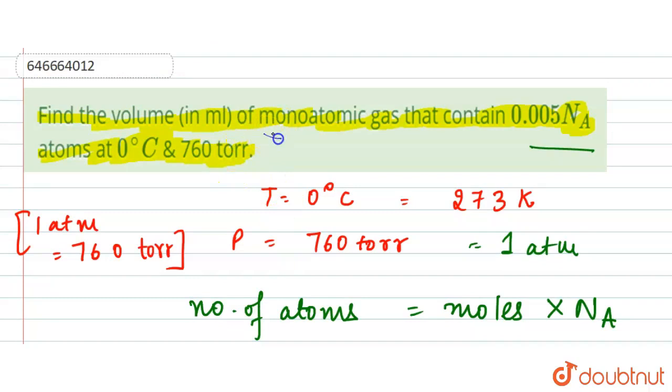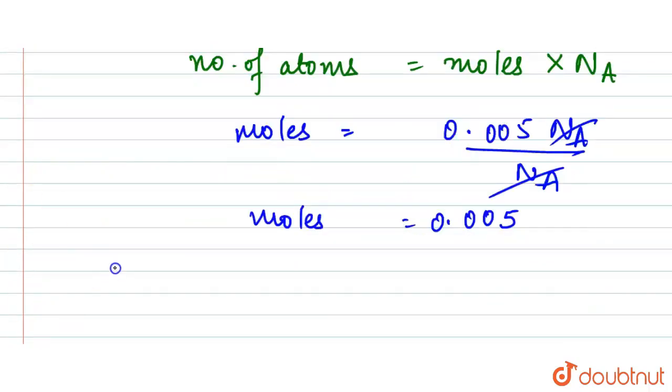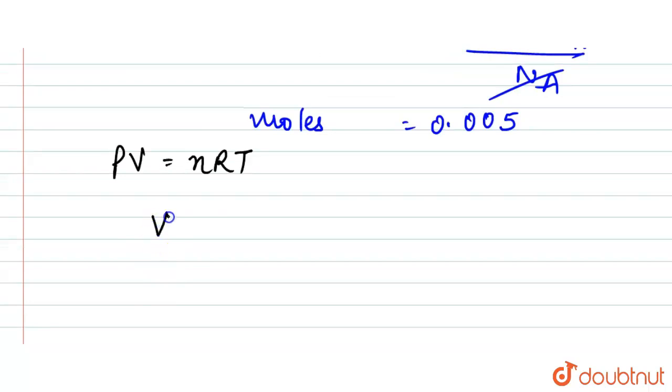Now here what is given is find the volume in ml for the monoatomic gas. So now here what we will use: PV is equal to nRT. Now we need to have V is equal to nRT upon P.